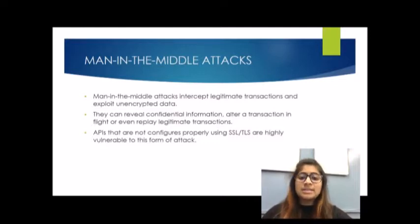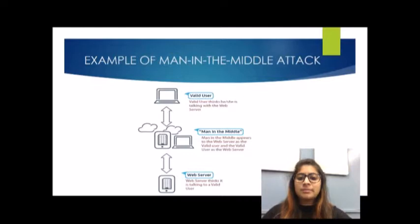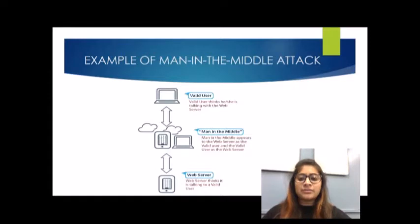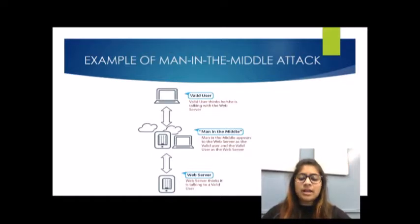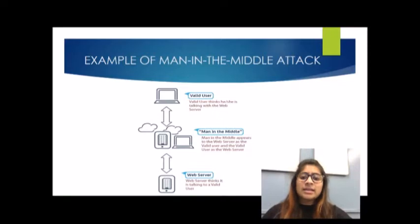In the API world, the stakes are higher — transport protection is essential to secure data, sessions, and access to functionality. From the diagram, it describes a situation in which an attacker sits between a sender and a receiver of information. The sender assumes they are interacting with the web server, but the man in the middle appears to the server as a valid user and to the valid user as the web server, enabling retrieval of all confidential information and misuse of it.